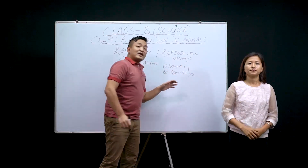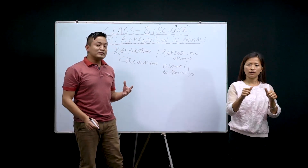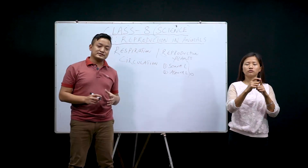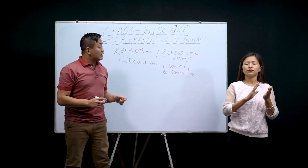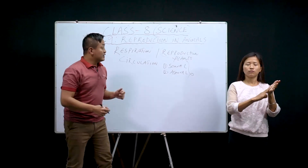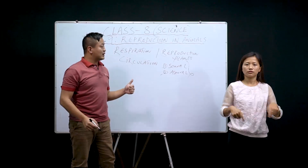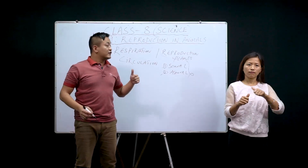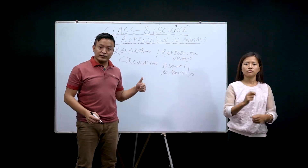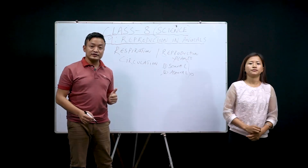Same for animals. In animals, do you know how many modes of reproduction there are? There are two modes of reproduction — sexual and asexual. Same as in plants, even for animals there are two modes of reproduction: sexual and asexual reproduction.